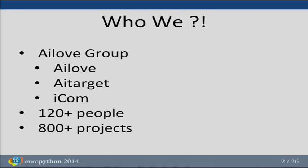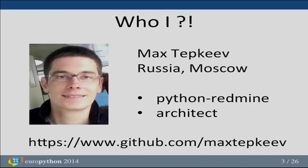My name is Max. I work and live in Russia, Moscow. I'm also the author of the Python RedMine package, which is currently the most popular and feature-complete package to access data from RedMine from Python. And I'm the author of Architect, which you may have seen from my lightning talk on Monday — it's the successor of the Django DB Parti package providing fully automatic table partitioning for Django, PeeWee, and SQLAlchemy users.